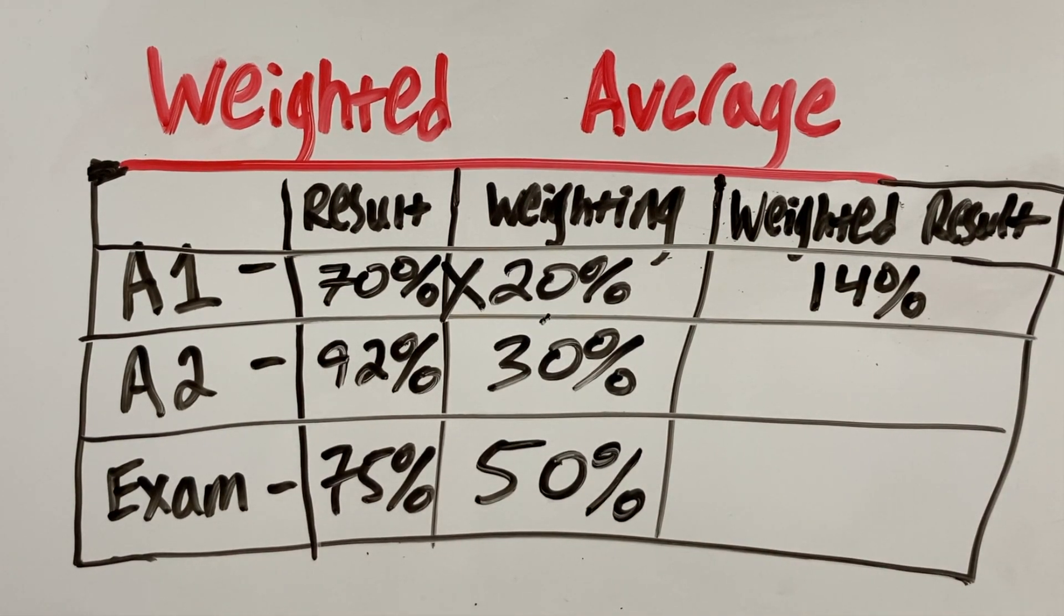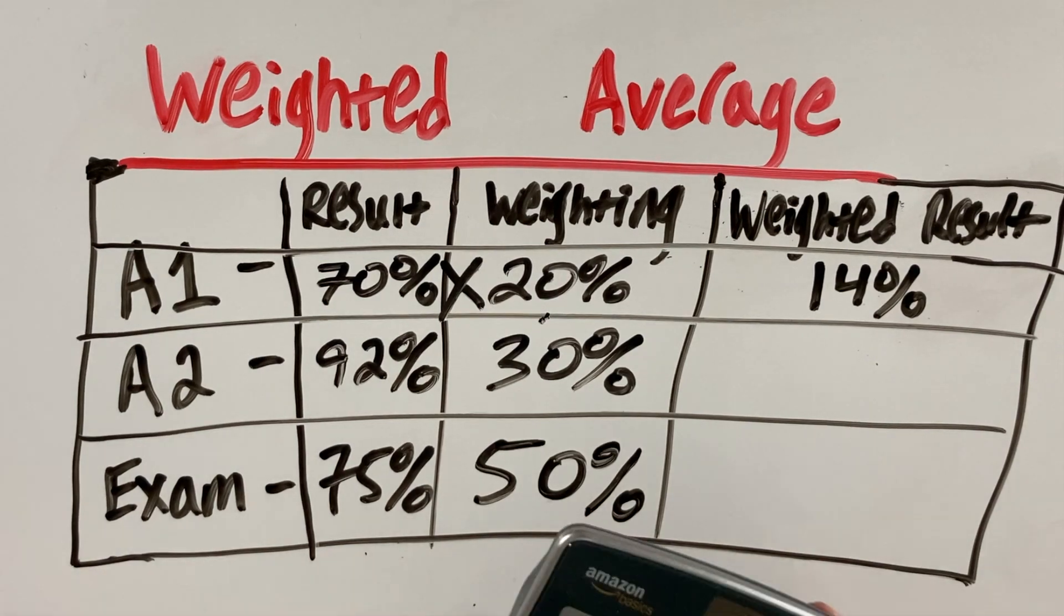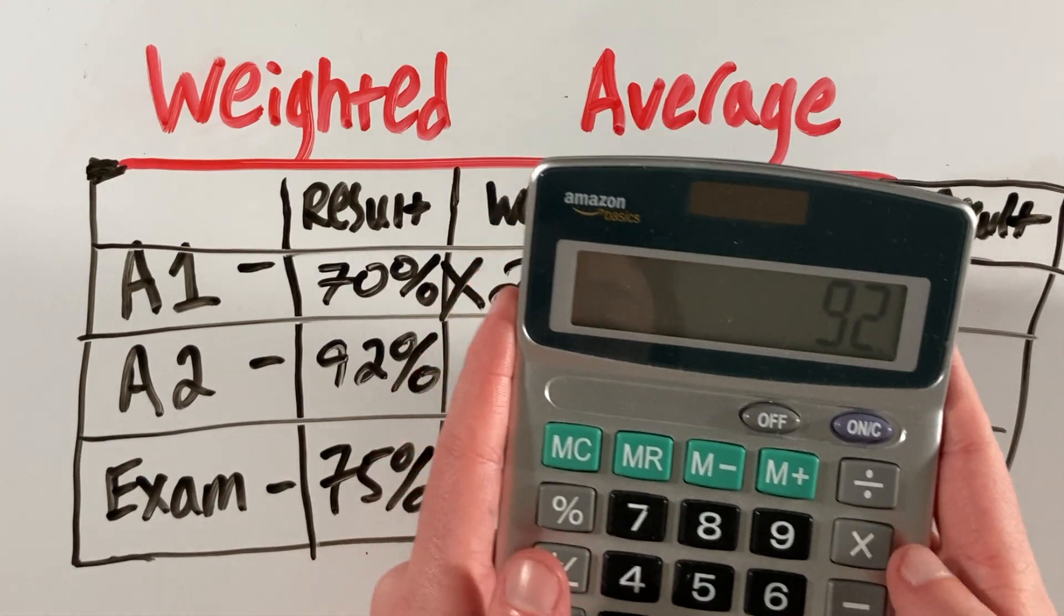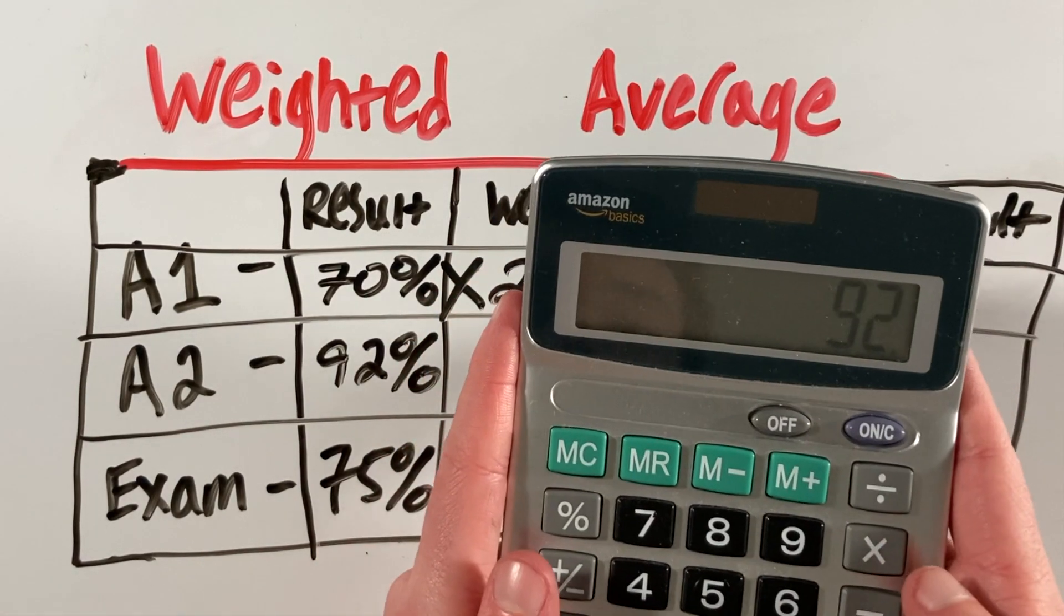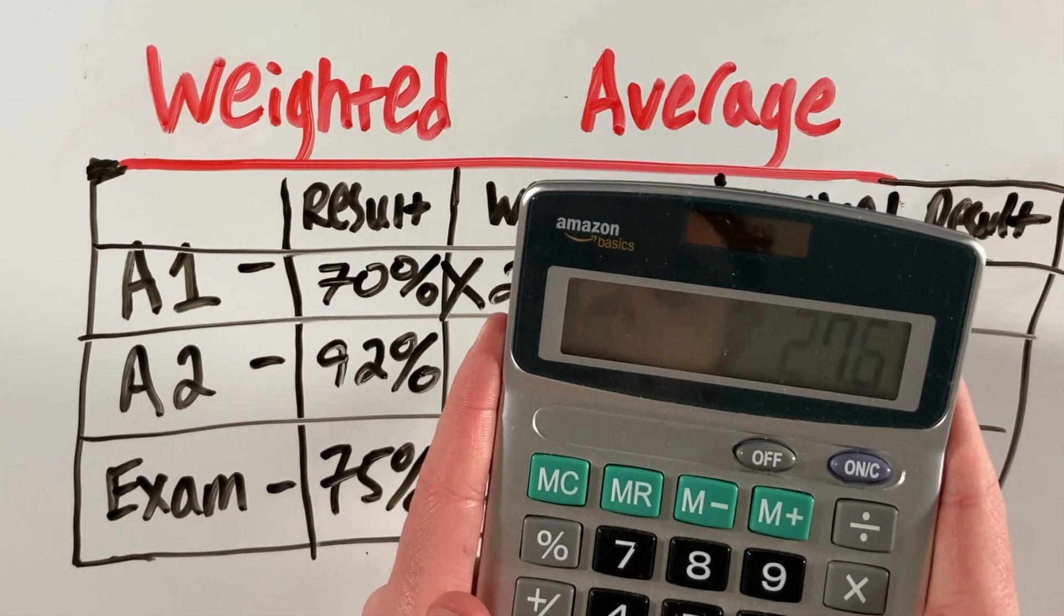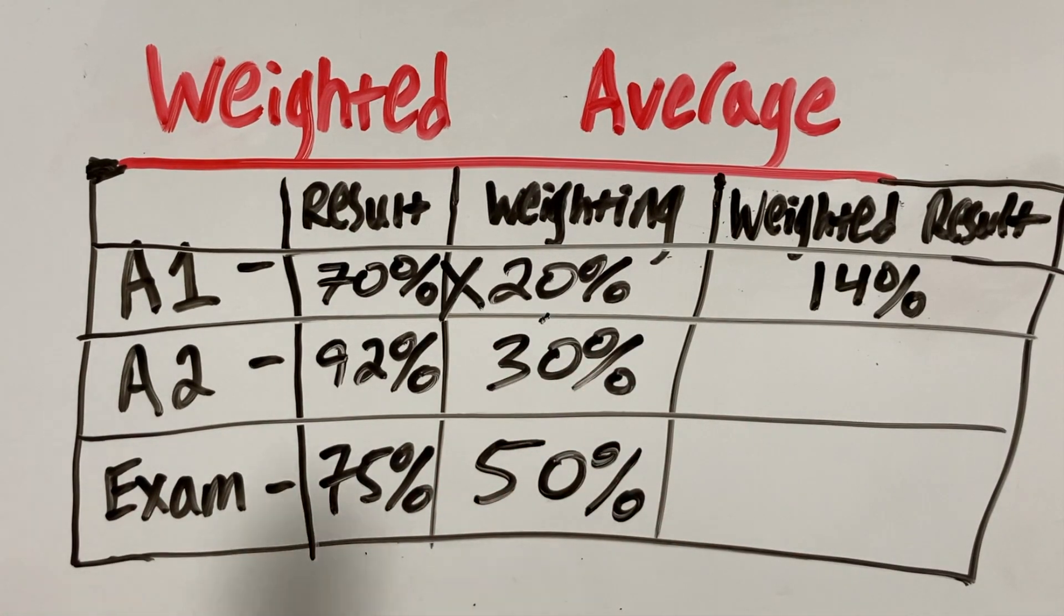For assignment 2, we have 92 and we multiply that by 30%. You can do this by hand or on a calculator. Just to show you, we have 92 times 0.3, which gives us 27.6%.